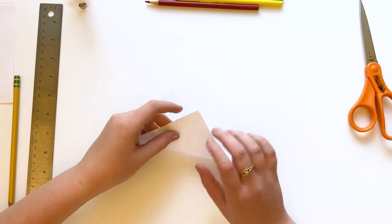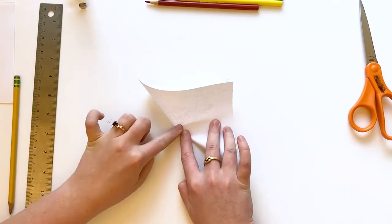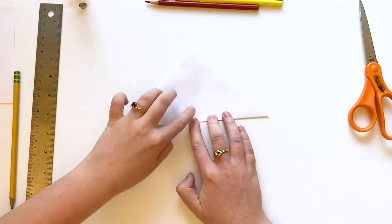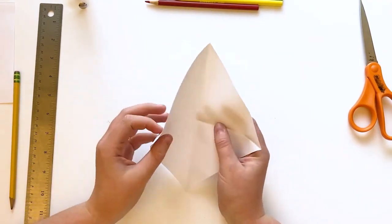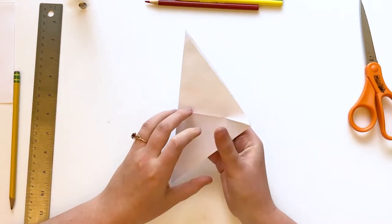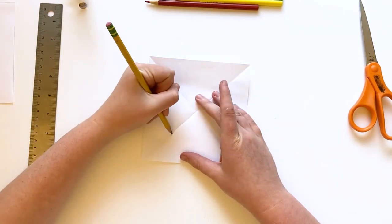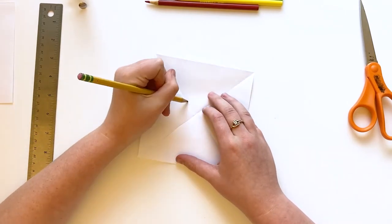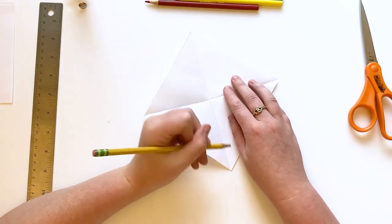Fold your square in half the opposite direction, again into the shape of a triangle. Fold the triangle. This will make a giant even X in the center of your square. Use a pencil to outline each triangle. Each triangle will be the area to draw your flag design.